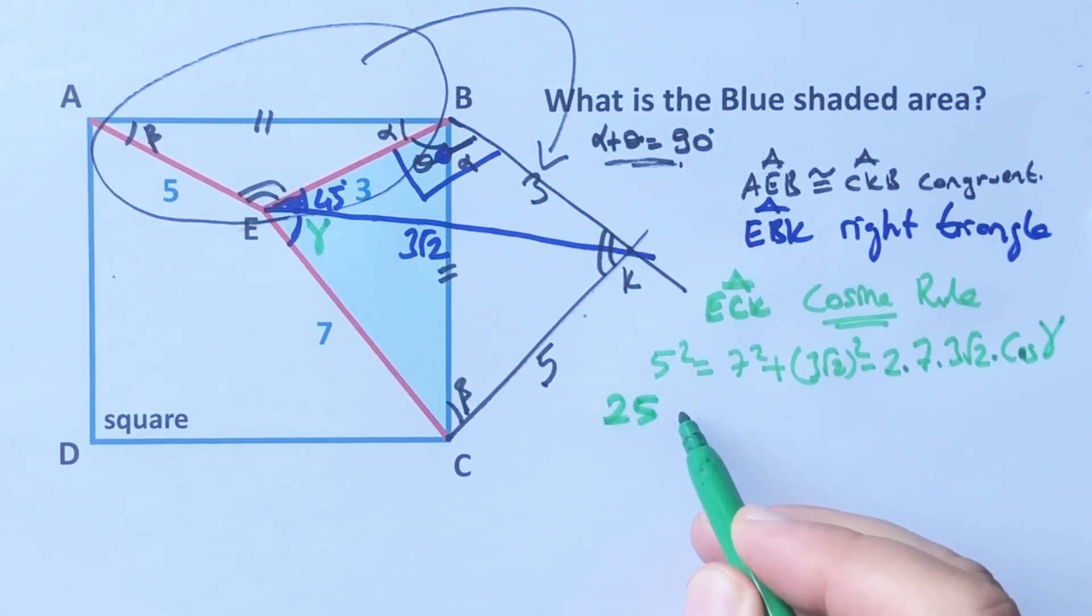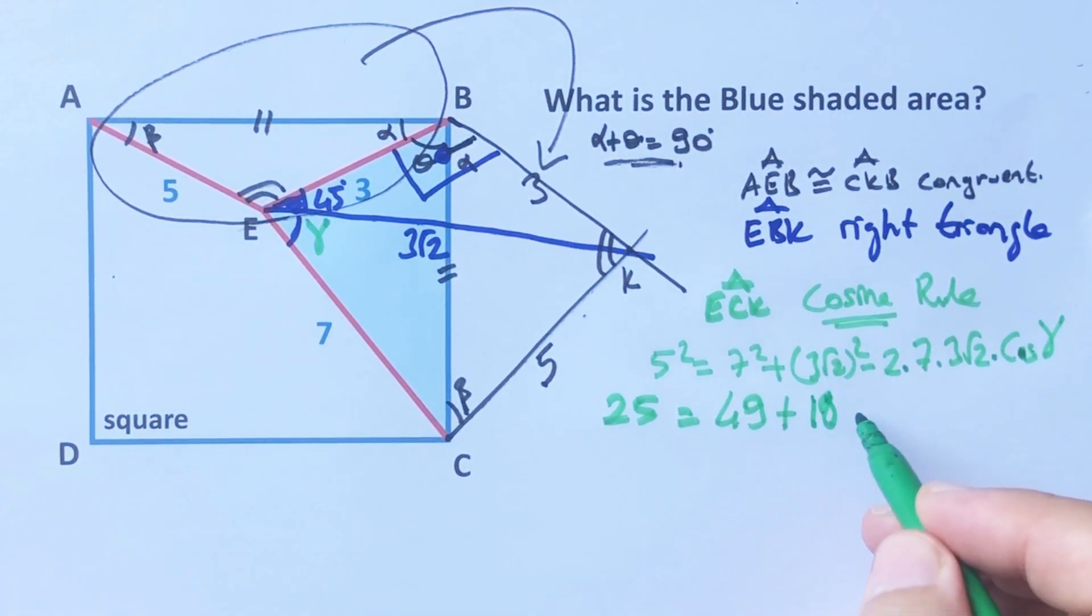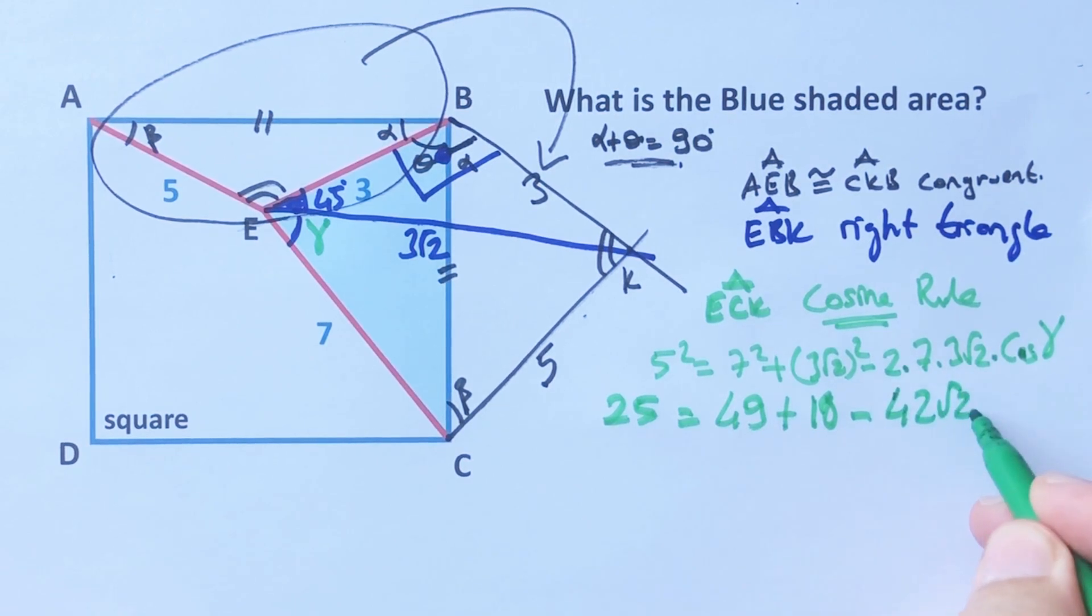Right, okay. So 25 equals 49 plus 18 minus 42 times root 2 times cosine gamma. Therefore 25 minus 67 equals minus 42 root 2 times cosine gamma.